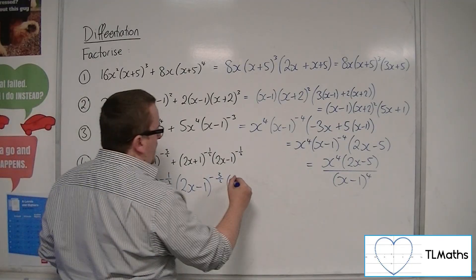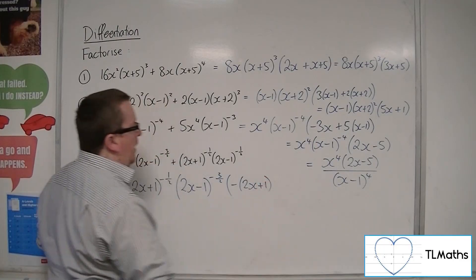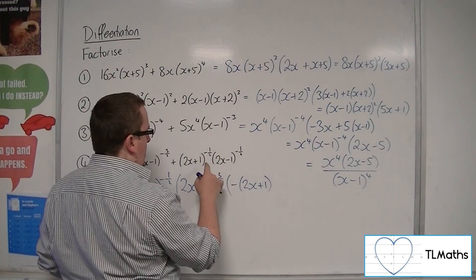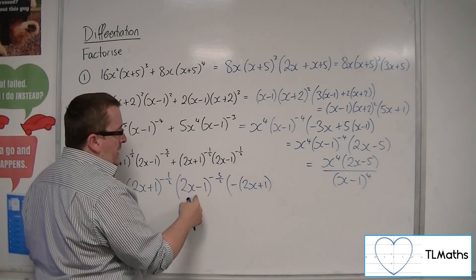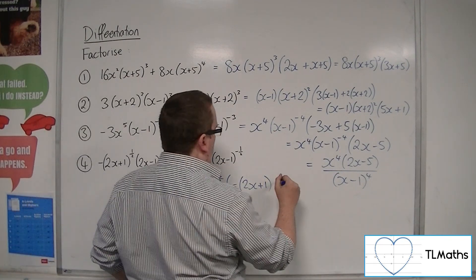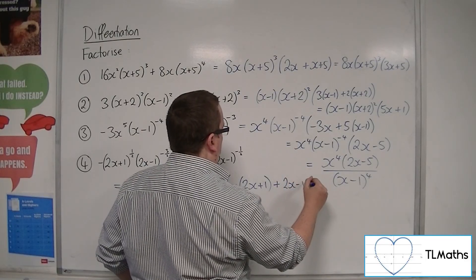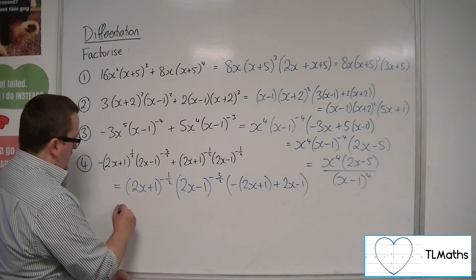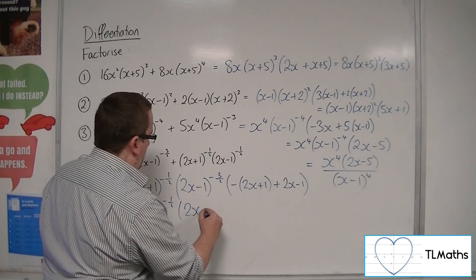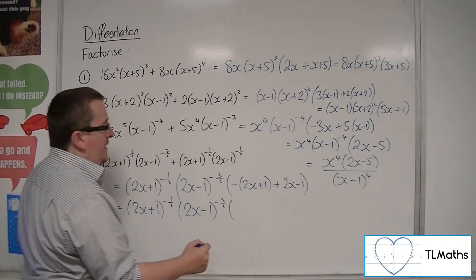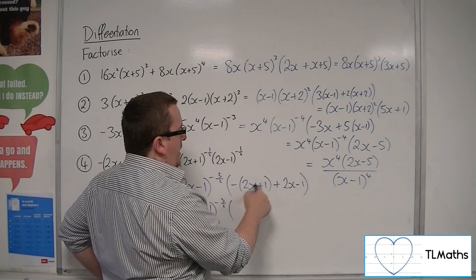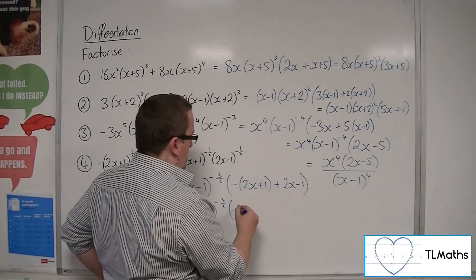So (2x+1)^(-1/2) times something will make (2x+1)^(1/2), and that will be (2x+1). Remember we've got that minus sign there as well, so it's -(2x+1). And to get to this term here, I would have to multiply this by (2x-1) to get to that. So it's +(2x-1). So we've got (2x+1)^(-1/2), we've got (2x-1)^(-3/2), and here we've got -2x+2x so they cancel. Then I've got -1-1, so -2.